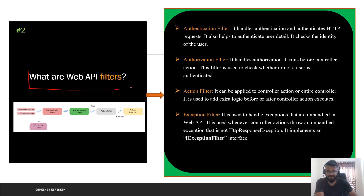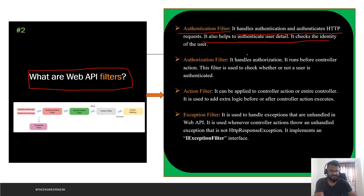The next question asks: what are Web API filters? Filters are required when we want to achieve something between the request and response. There are four kinds of filters in MVC Web API. The first is authentication filters — it checks the identity of the user. The second is authorization filter, which deals with authorization and runs before the controller action. This filter is used to check whether a user is authenticated or not.